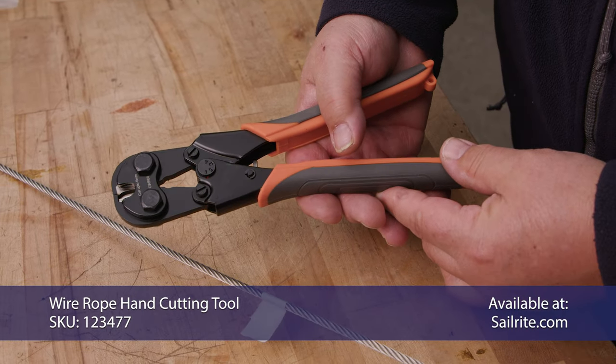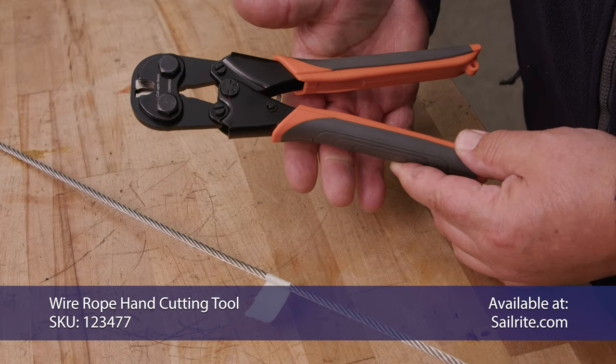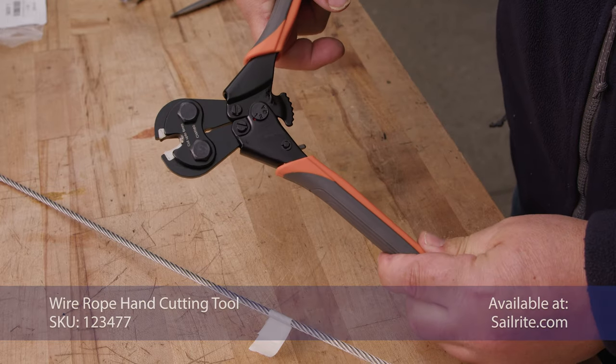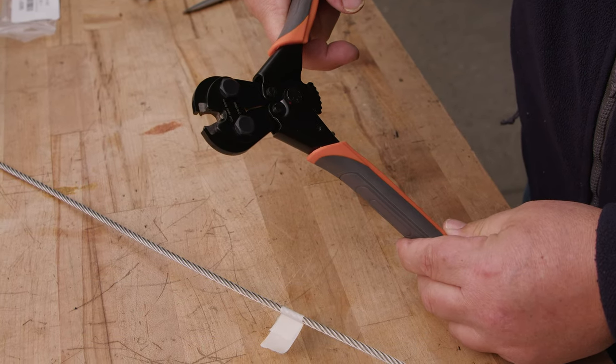This is a wire rope hand cutting tool or wire cutters. They don't open up unless you actually press all the way down and then it releases, and then you can open it up to its maximum opening.